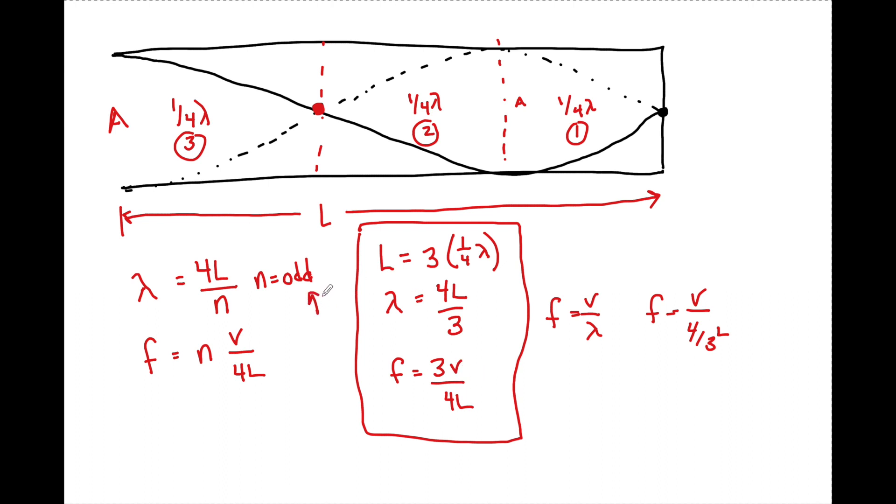The pattern for this that we can memorize or derive is that the wavelength for any tube to find the resonance is going to be equal to four L divided by the N number. But N must be odd. And the frequency can be found by saying that the N number times V over four L. You cannot have a node at the end of an open tube.